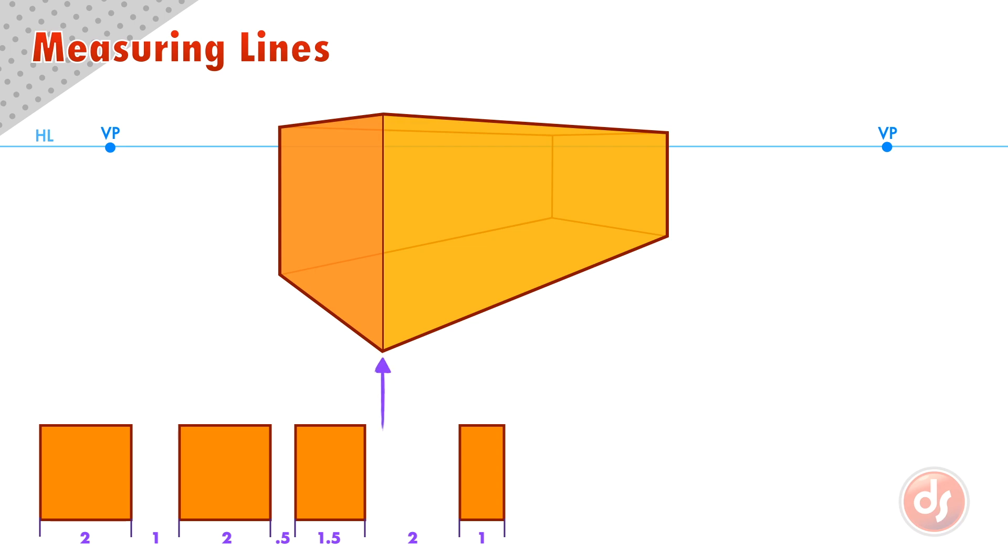From the bottom corner of our box, we will draw a horizontal line across our page. This is our measuring line. Then we divide the measuring line up in the same ratio of our reference boxes.